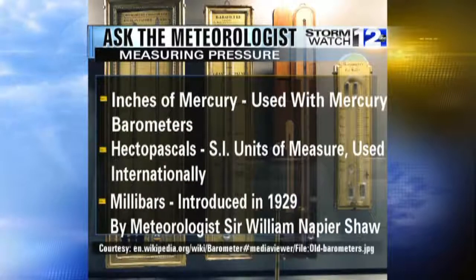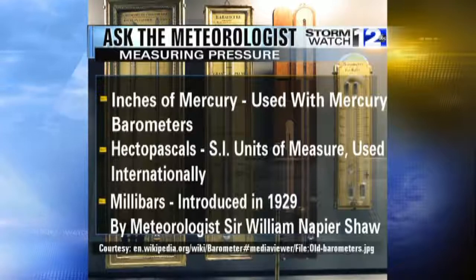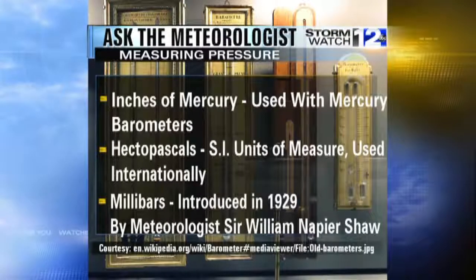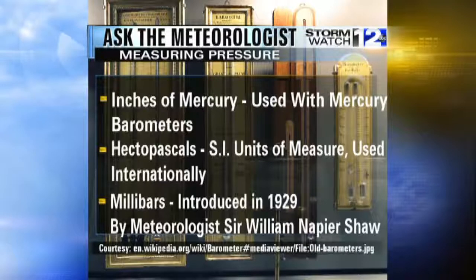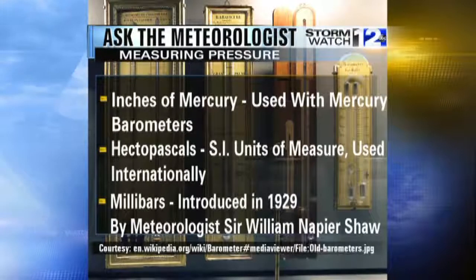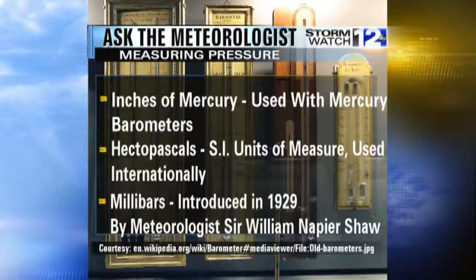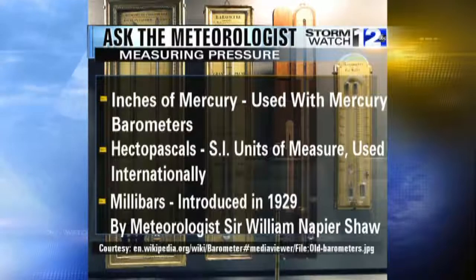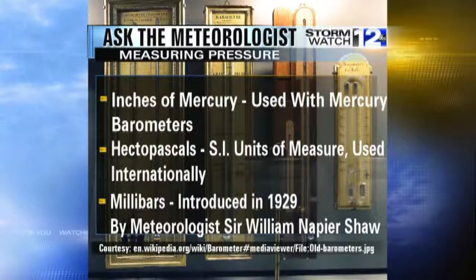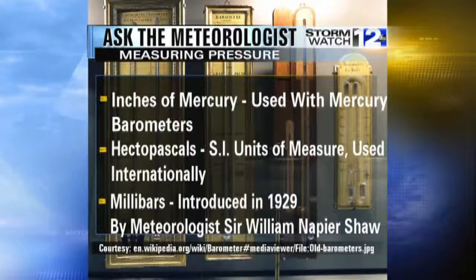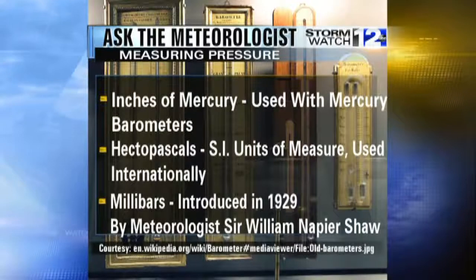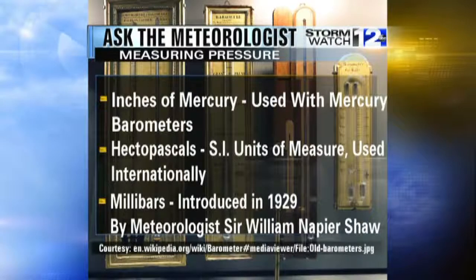One way that you might have heard of is inches of mercury, and that's used with mercury barometers to actually measure the pressure. For example, you would see 29.92 inches of mercury. In hectopascals — that might not be something you've ever heard of before — that's the SI unit of measure, and it's used and understood by scientists. And even though meteorologists are scientists, we stick with millibars.